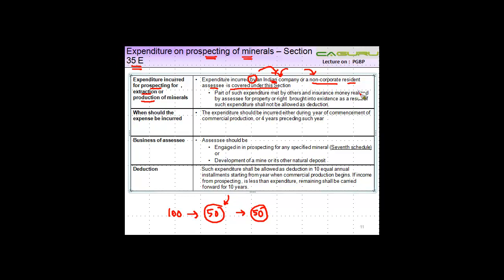And insurance money realized by the assessee for property or right brought into existence as a result of such expenditure shall not be allowed as a deduction. So let's say for example you incurred this 100 and you made some property.